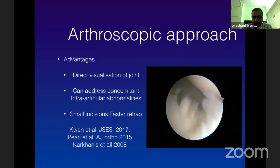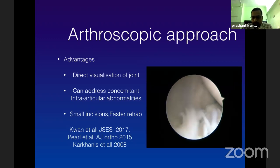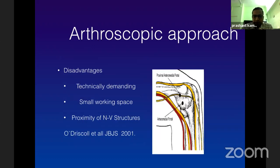There are disadvantages too: it is a technically demanding procedure with a longer learning curve, and you have to work in a narrow space — compared to knee and shoulder — with close proximity of neurovascular structures. As the previous speaker mentioned, transient neuropraxia is the most common neurovascular complication. I'm going to show a video technique for ECRB release. This patient is a middle-aged homemaker suffering from lateral epicondylitis for six to seven months who has undergone all non-surgical treatment and cannot perform activities of daily living.